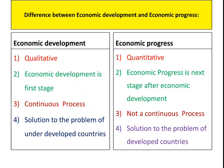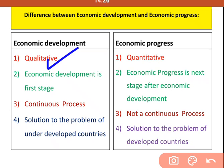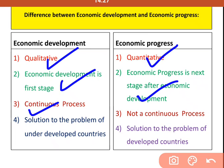Now, the difference between economic development and economic progress: economic development is qualitative, while economic progress is quantitative. Economic progress can also be called economic growth — progress and growth mean the same thing. Economic development is the first stage, and economic progress or growth is the next stage. Economic development is a continuous process, whereas growth is not a continuous process.